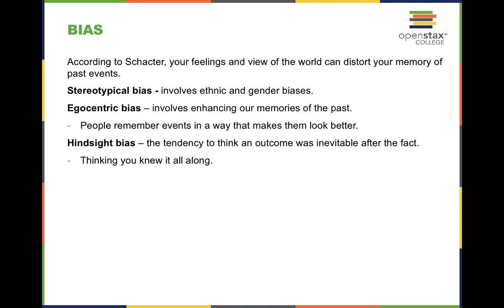Let's talk about some biases within memory. We've got stereotypical bias, which involves ethnic and gender biases. We've got egocentric bias, which involves enhancing our memories of the past. For example, you may have a friend who retells a story you both experienced and makes it far more grandiose than it actually was — like 'I caught a fish this big' with ever-expanding hands. It's because they want people to look at them admirably; they'll enhance a story or memory of the past to make themselves look better.